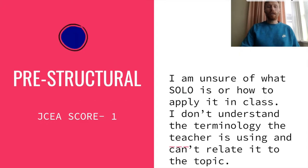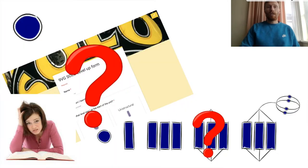If you're at a pre-structural stage for this one, which is a JCA score of one: I am unsure of what SOLO is or how to apply it in class. I don't understand the terminology the teacher is using and can't relate it to the topic. This means you don't know the current topic, can't comprehend any of the language being used, and have no idea what SOLO is or how it relates to your learning.